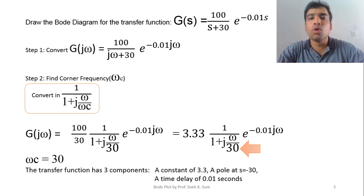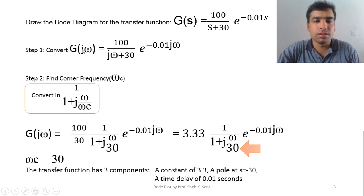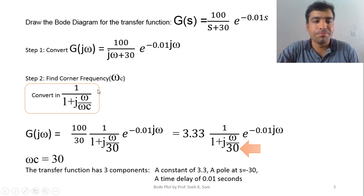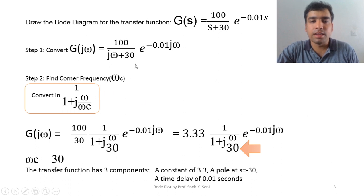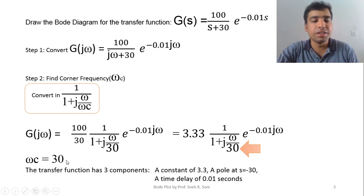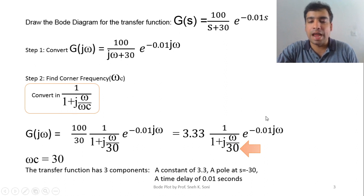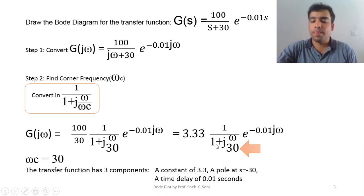Let's start with step one. We replace s by jω, so the transfer function becomes G(jω) = 100 / (jω + 30) * e^(-0.01jω). We find the corner frequency for the pole at s = -30. Simplifying to the 1/(1 + jω/c) form, the corner frequency is 30 radians per second. The gain is 3.33 and there is a time delay of 0.1 second.